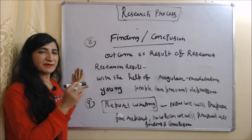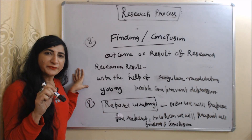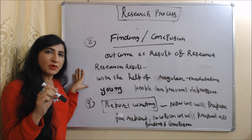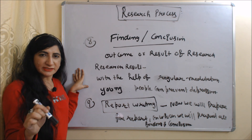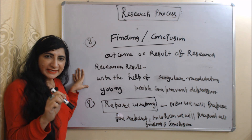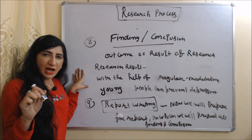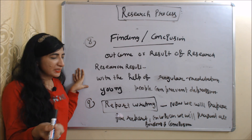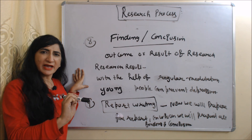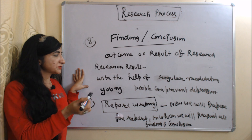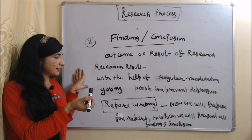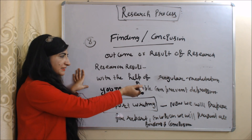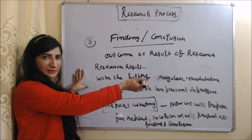The next step is finding and conclusion. Finding and conclusion are the outcome, or we can say the result, of research. Suppose we have accepted our hypothesis, so our final result is that with the help of regular meditation, young people can prevent depression.